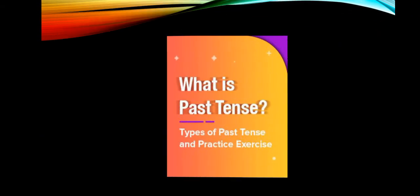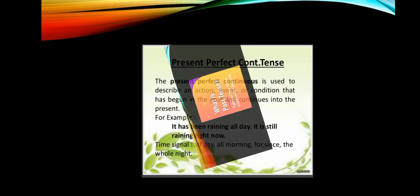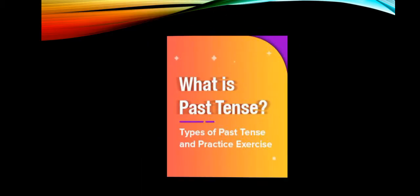Present perfect continuous tense is used to describe an action that began in the past and continues up to the time of speaking. Keywords for this tense include 'all day,' 'since,' and 'for.'